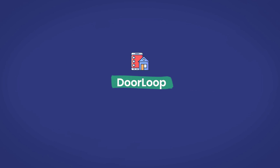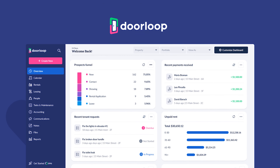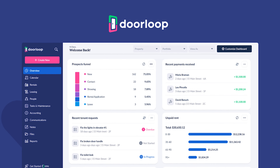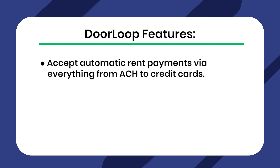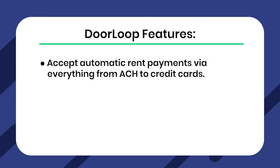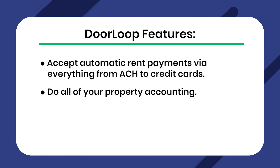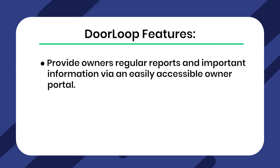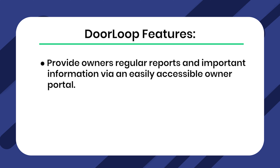DoorLoop. Great for all-in-one property management. The more comprehensive of the two property management solutions on my list, DoorLoop offers everything you could ever need to manage your properties from one place. You can accept automatic rent payments via everything from ACH to credit cards, do all your property accounting, communicate directly with tenants via a convenient tenant portal, and provide owners regular reports and important information via an easily accessible owner portal.